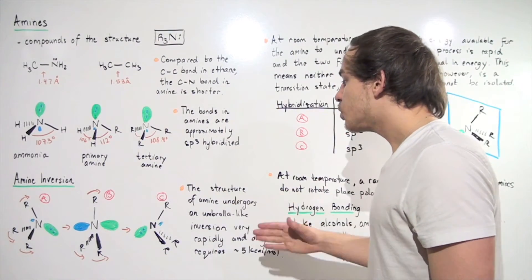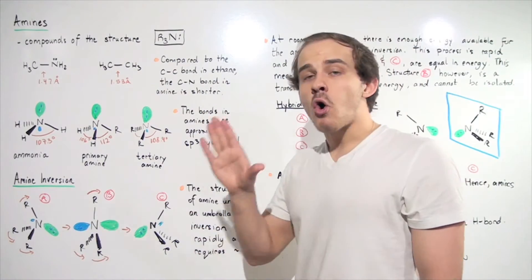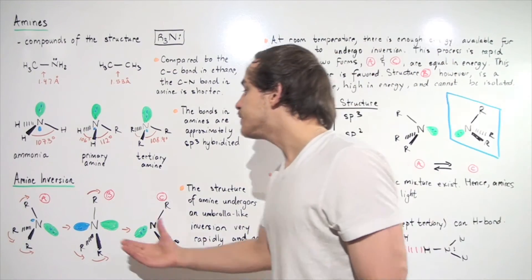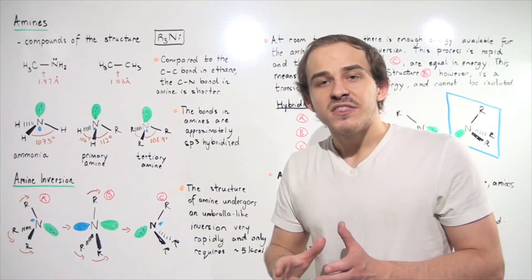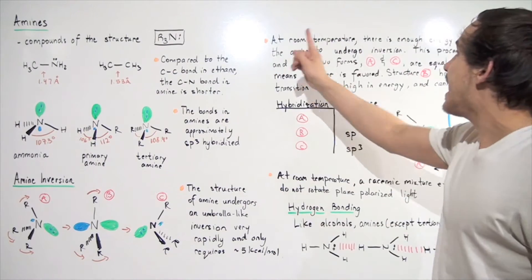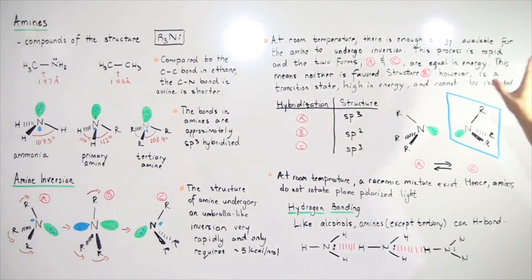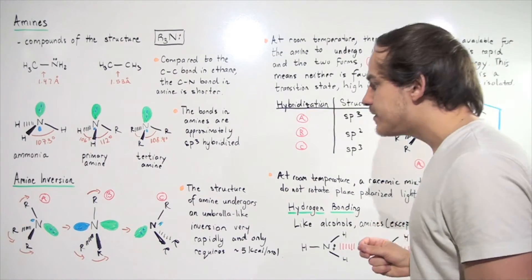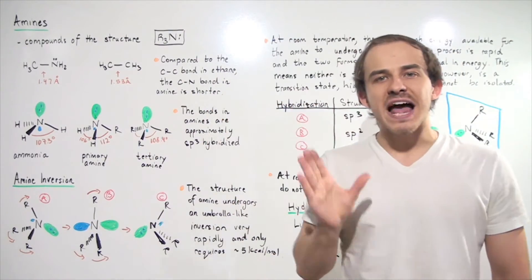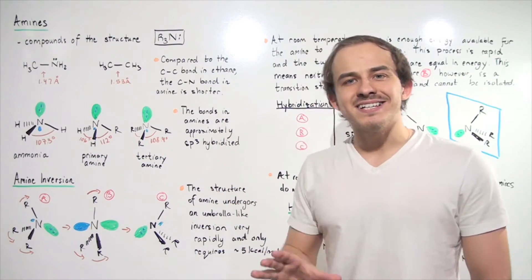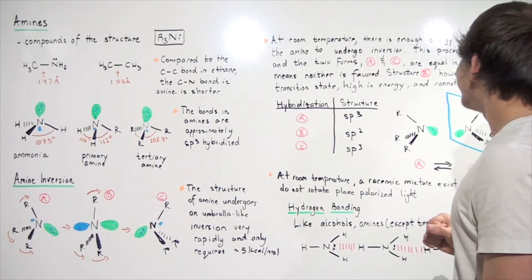The structure of the amine undergoes this umbrella-like inversion, but it costs energy. And in fact, it costs about 5 kcal per mole of energy to invert this amine. But at room temperature, that's plentiful of energy. We have that energy available at room temperature. And that means at room temperature, there is enough energy available for the amine to undergo inversion. This process is rapid, and the two forms, A and C, are equal in energy. That means that neither of these compounds, A and C, will be preferred. They will exist in the same exact proportion at room temperature.